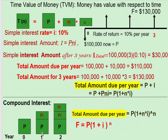For compound interest, the first year is the same as simple interest: F = P + P×i. But after year one, compound interest works on the previous amount, not the original principal. So in year two, you are applying the interest rate to the previously accumulated amount. There is always interest charged on the previously earned interest.